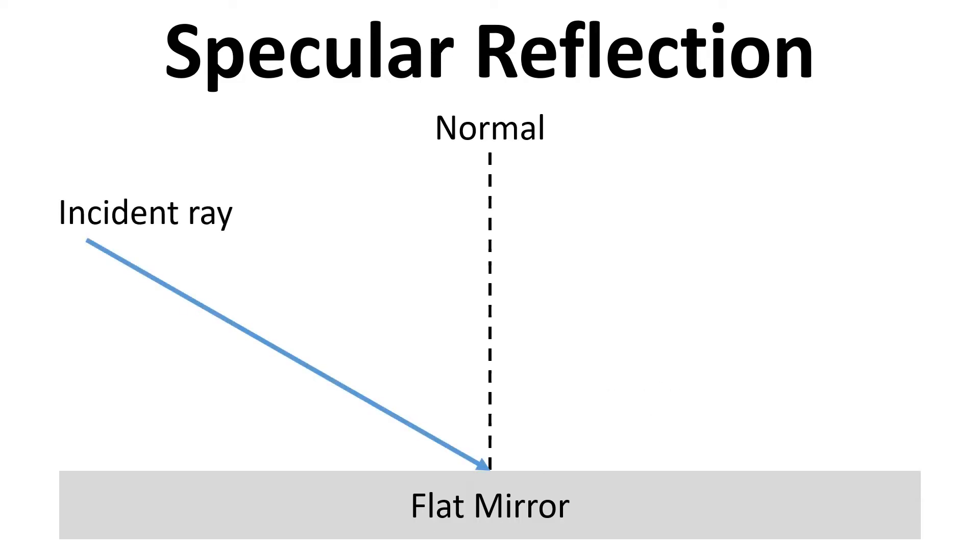This is a light ray that travels in a straight line and it hits the mirror at the point where the normal line intersects with the mirror as well.